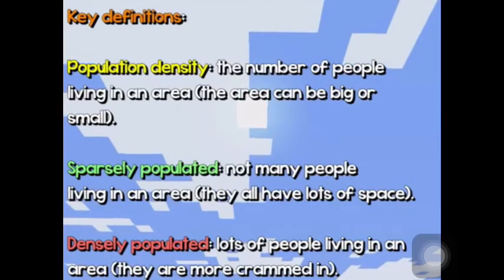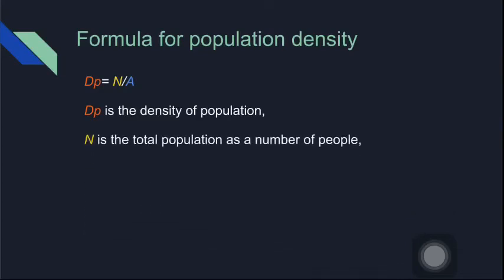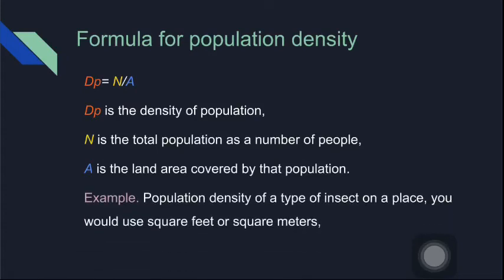The formula for calculating population density is: dp = n / a. In this equation, dp is the density of population, n is the total population as a number of people, and a is the land area covered by that population. A is usually expressed in square miles or square kilometers, especially when looking at human population. However, you could use smaller units as well.